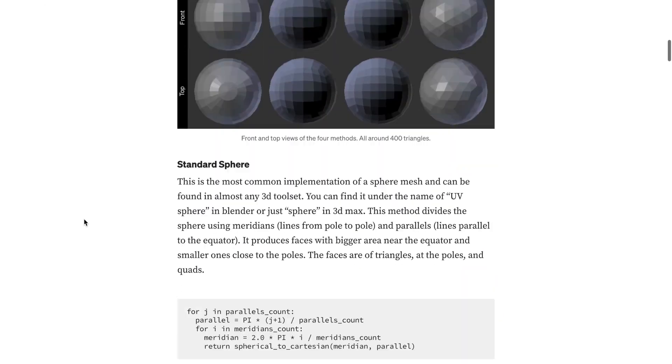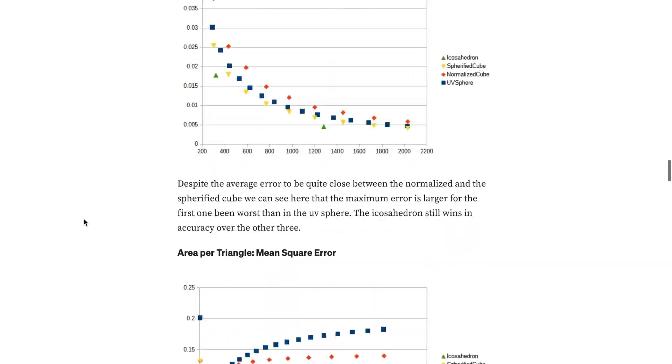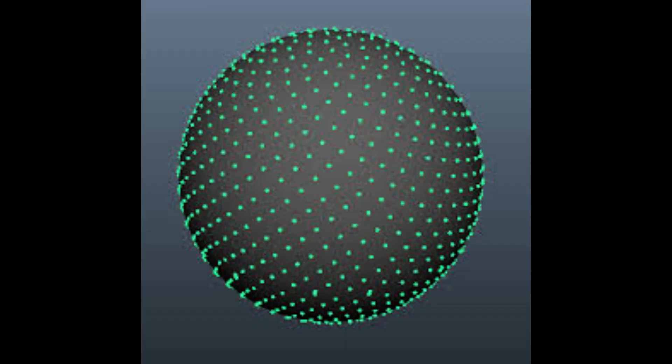Now instead of doing the sensible thing and using math done by people who are much smarter than I am, I decided that I wanted to try to write my own algorithm to place vertices or points along the surface of a sphere, and then they could be connected into triangles later.